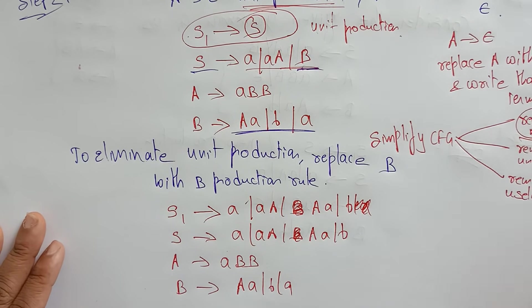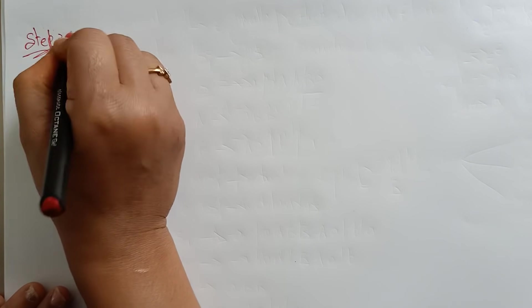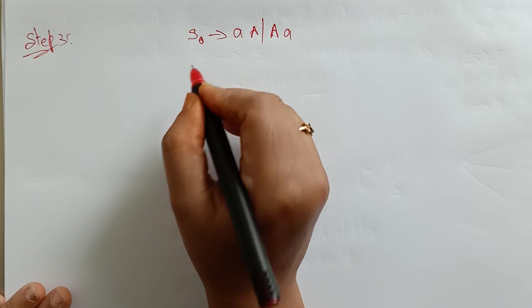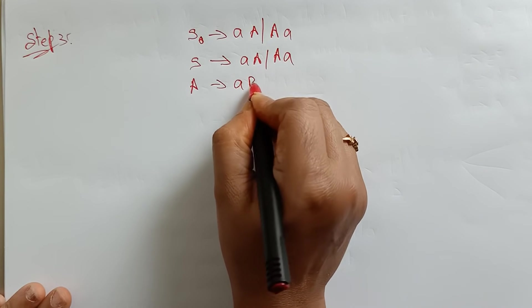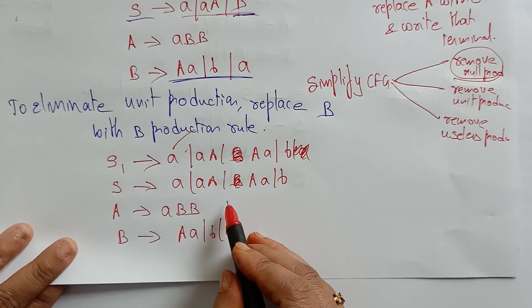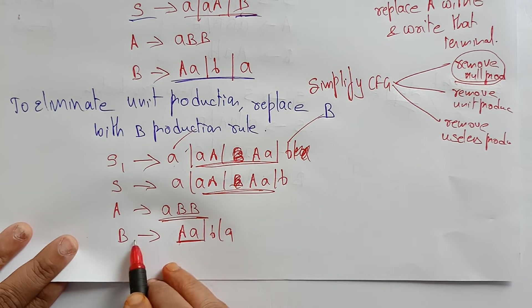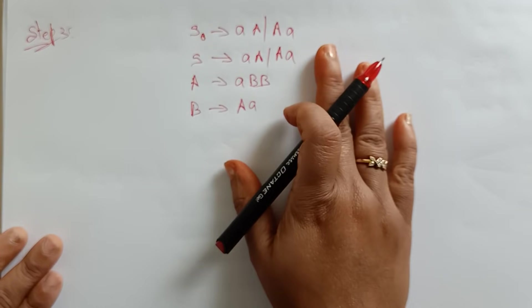Now the third step. After removing unit productions, we have new productions. In step three, looking at the production rules: S1 determines AAAA — actually these are the productions that still violate Chomsky Normal Form. S1 determines A and S1 determines B are in CNF. Only the productions with three or more symbols on the right-hand side are not in CNF. A determines XBB is also not in CNF. So there are four productions not in CNF.